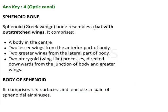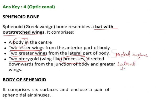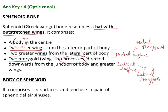To quickly walk through: the sphenoid bone looks like a bat with outstretched wings. There is a body in the center, two lesser wings, two greater wings, and two pterygoid wing-like processes. The medial surface of the pterygoid plate has the medial pterygoid muscle attached, and the lateral surface has the lateral pterygoid muscle attached. The body of the sphenoid also gives housing to the sphenoidal air sinuses.